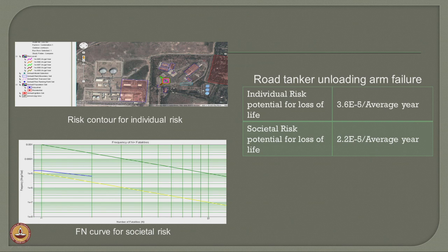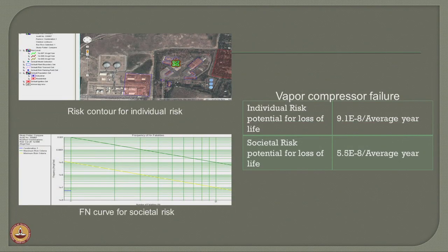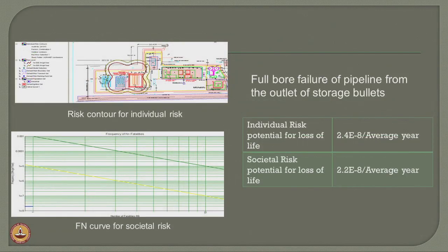For road tanker unloading arm failure, which is a specific geographic location in the plant, individual risk is about 3.6 × 10⁻⁵ per year and societal risk is slightly higher at 2.2 × 10⁻⁵, which is beyond the boundary of acceptable limits of the risk contour. Vapor compression failure is local to the tanker discharge point, with frequency 9.1 × 10⁻⁸ compared to societal risk of around 5.5 × 10⁻⁸, within acceptable bands. For full bore failure of the pipeline from the outlet of storage bullets at XXX plant, individual risk is 2.4 × 10⁻⁸ and societal risk is 2.2 × 10⁻⁸, within acceptable limits for the oil and gas industry.